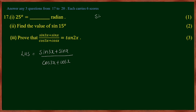We use the sum-to-product formulas: sin A plus sin B equals 2 sin((A+B)/2) cos((A-B)/2), and cos A plus cos B uses a similar formula.